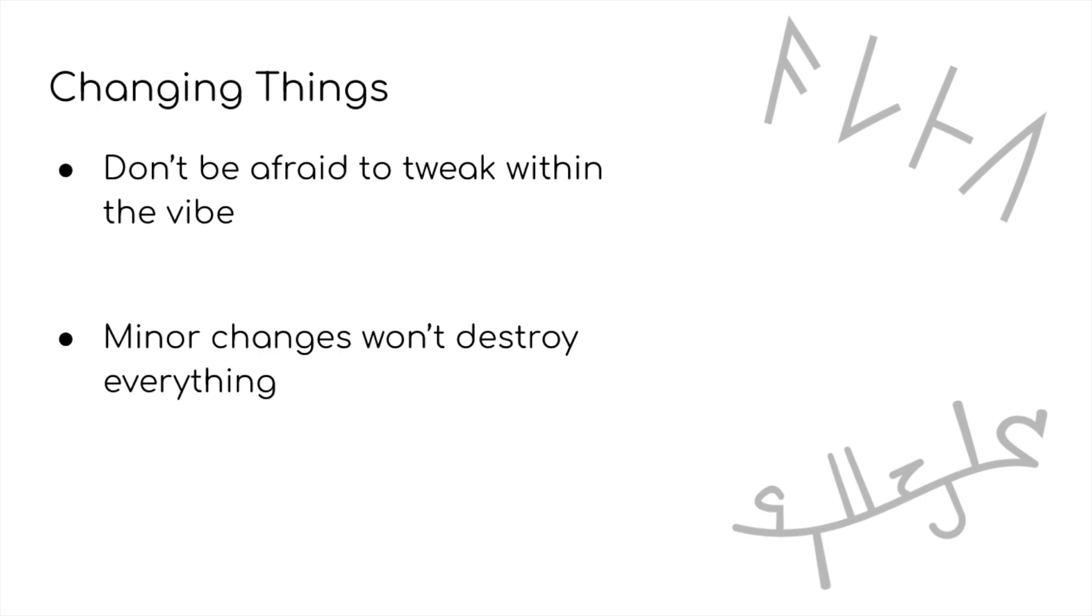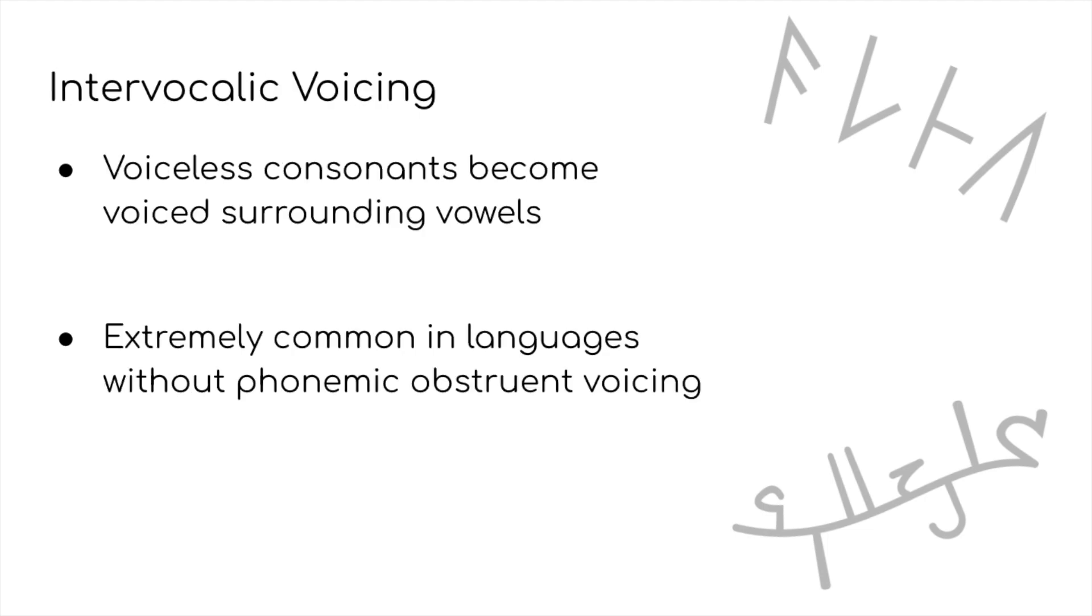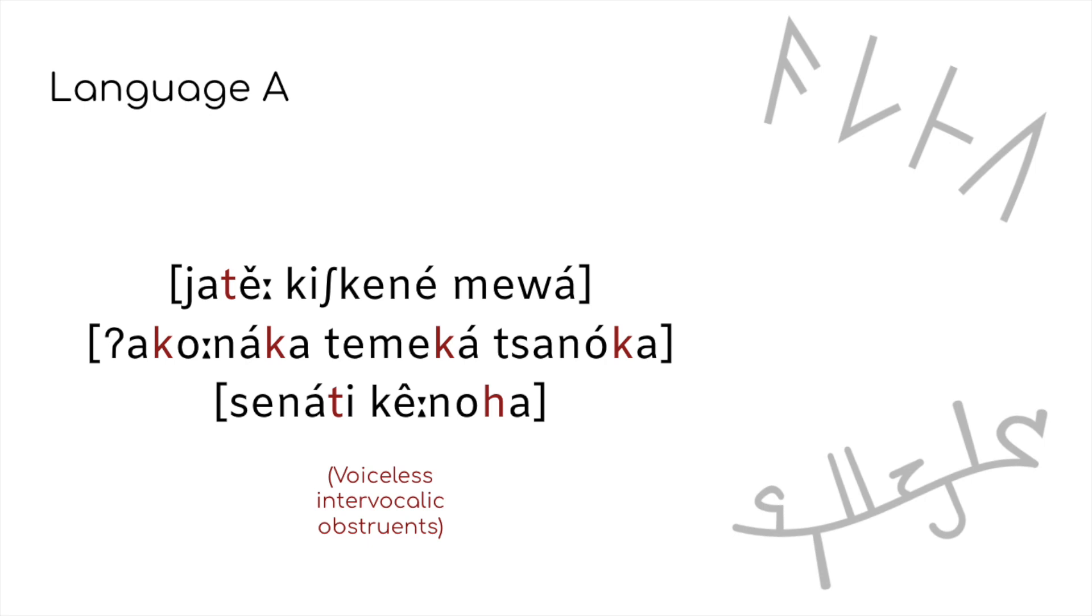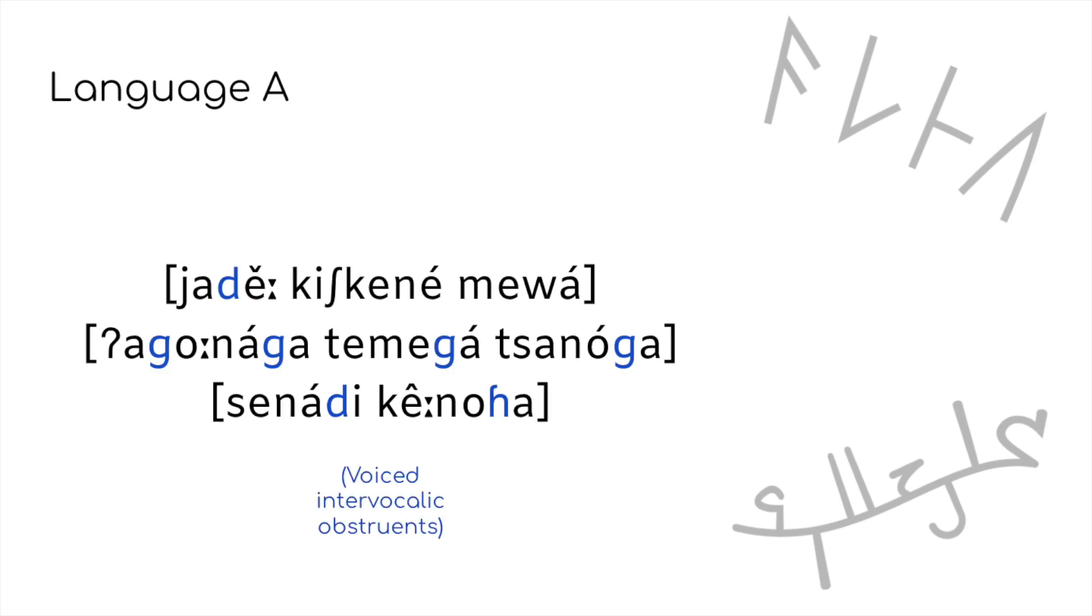As a final assimilatory process, we can take a look at intervocalic voicing. Here, a voiceless consonant, often a stop or affricate, but sometimes a fricative as well, becomes voiced when surrounded by vowels, which is once again an extremely common process, especially in languages without phonemic voicing contrasts. However, if we look at language A, which doesn't have these voicing contrasts, we notice that obstruents are always voiceless, even intervocalically. Changing this feature changes the vibe we set originally quite substantially, so I'll opt to not have this change and keep it how it was before. This lack of intervocalic voicing is rather uncommon, so it'll serve as a fun little quirk for language A.